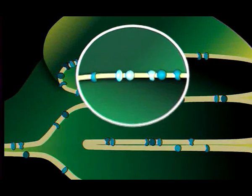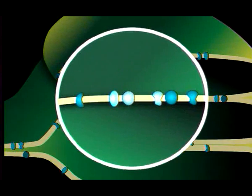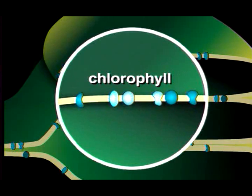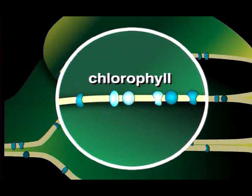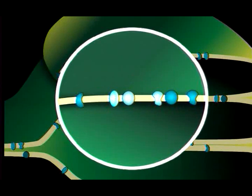A closer view shows that a green pigment called chlorophyll is embedded in the membranes of a thylakoid. Chlorophyll gives plants their green color and is responsible for capturing the energy of sunlight.